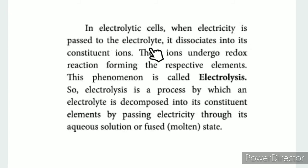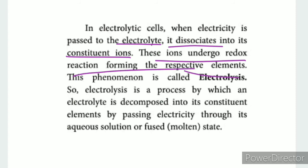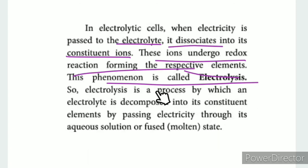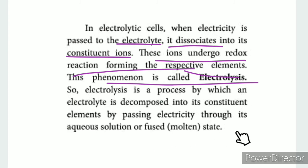In electrolytic cells, when electricity is passed to the electrolyte, it is dissociated into ions. These ions undergo a redox reaction forming the respective elements. This phenomenon is called electrolysis. Electrolysis is a process by which an electrolyte is decomposed into its constituent elements by passing electricity through its aqueous solution or fused molten state.